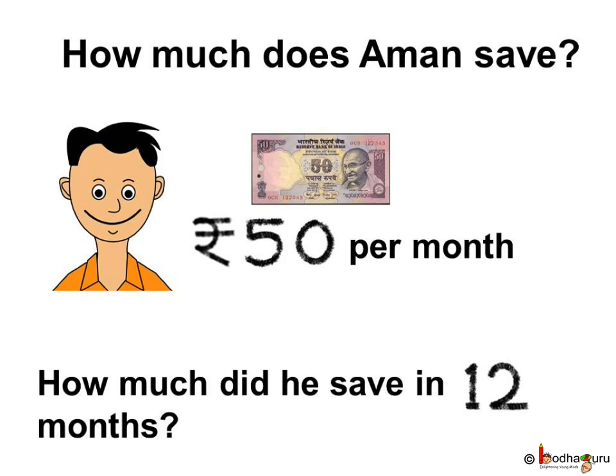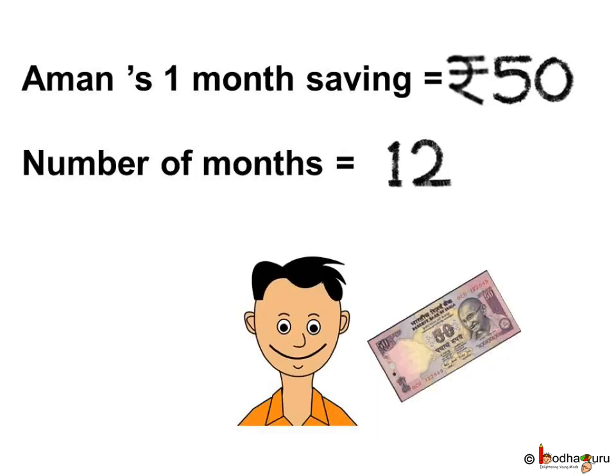A boy named Aman saves 50 rupees per month from his pocket money. How much did he save in 12 months? Let us see what we need to find. As we know, he saves 50 rupees per month. Now we have to find how much he saves in 12 months.